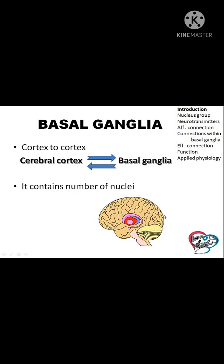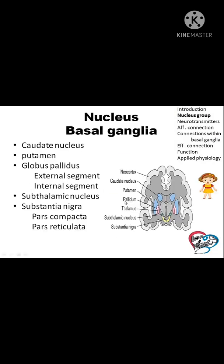It is the cortex-to-cortex circuit, which means the information from the cerebral cortex is sent to the basal ganglia, and the information again passes to the cerebral cortex. It has many layers.